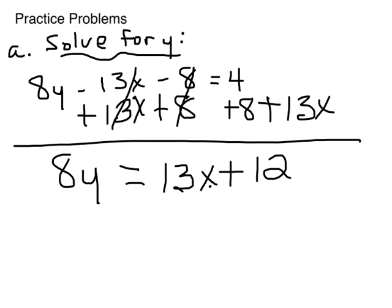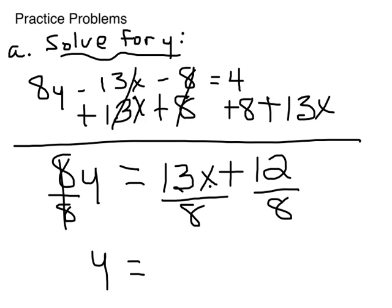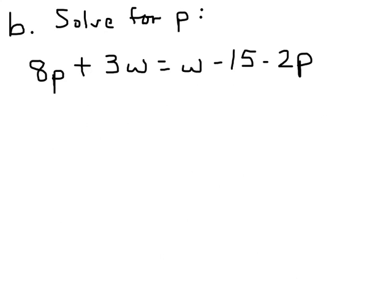Alright, so we still don't have y completely isolated. We're going to need to divide by 8. So we divide every term by 8, and we get y equals 13/8 x plus... now 12 over 8 will reduce. 4 will go into 12 three times and into 8 two times. And you can leave it like that because when we start graphing, you really will need to leave it as a fraction.